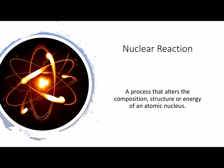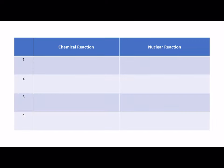So a nuclear reaction. A nuclear reaction is a process that alters the composition, structure or energy of an atomic nucleus. So let's have a look at the differences here between a nuclear reaction and a chemical reaction. So as you can remember from your bonding, chemical reactions involve electrons while a nuclear reaction is about the nucleus.